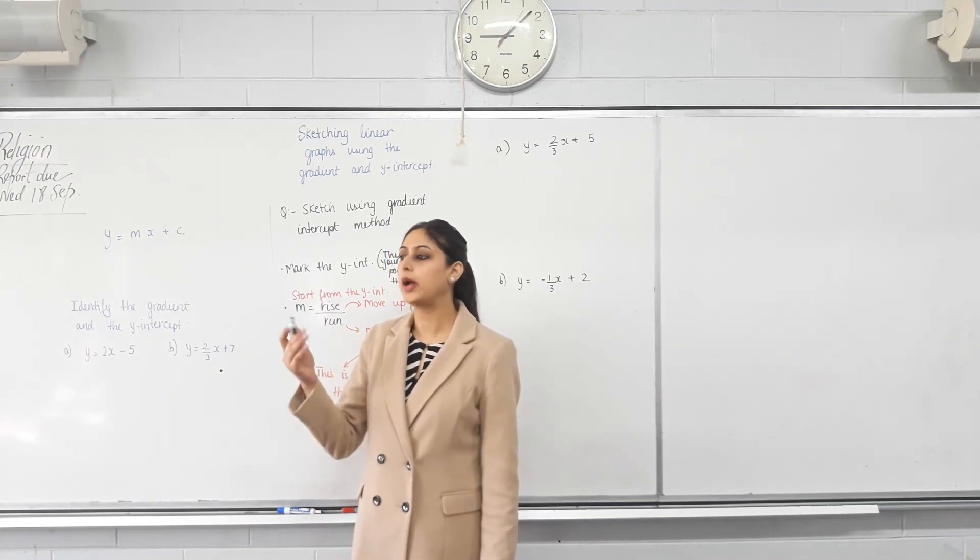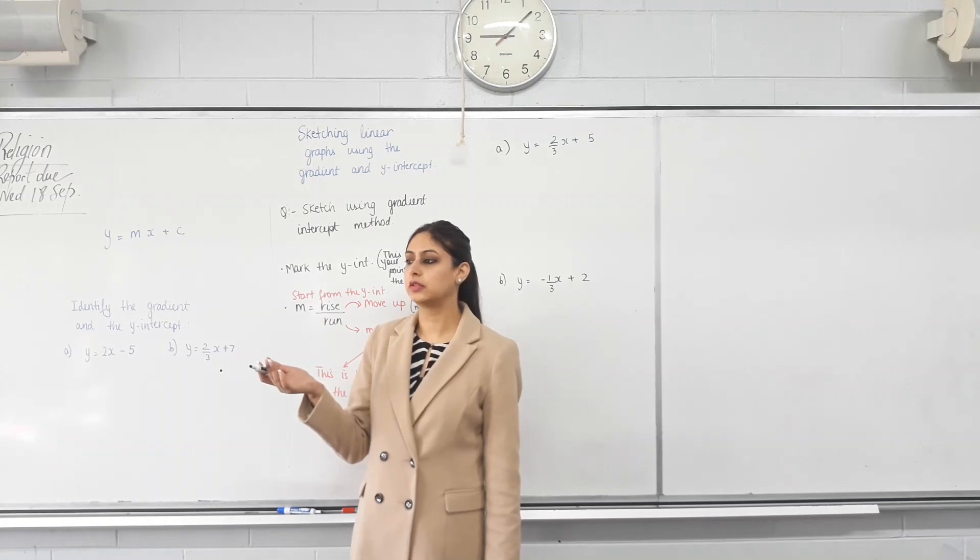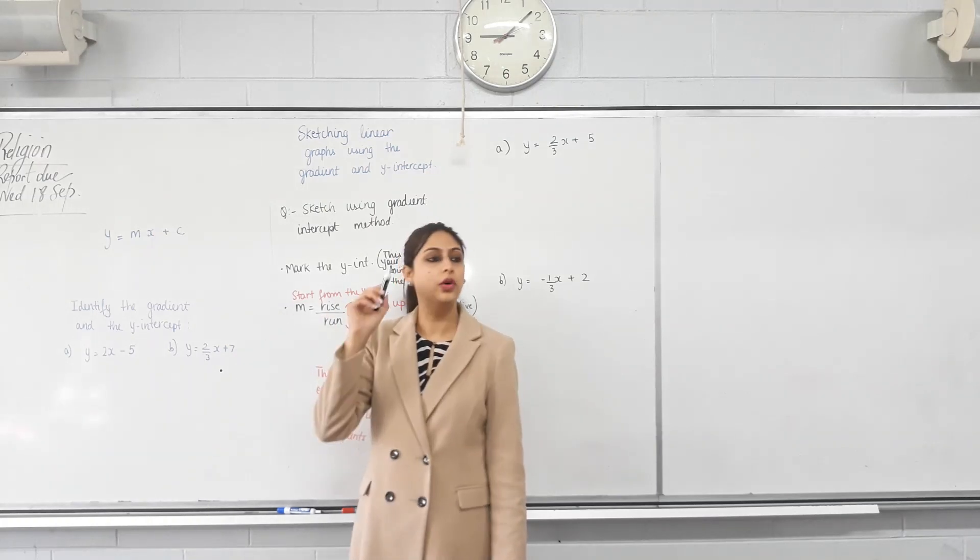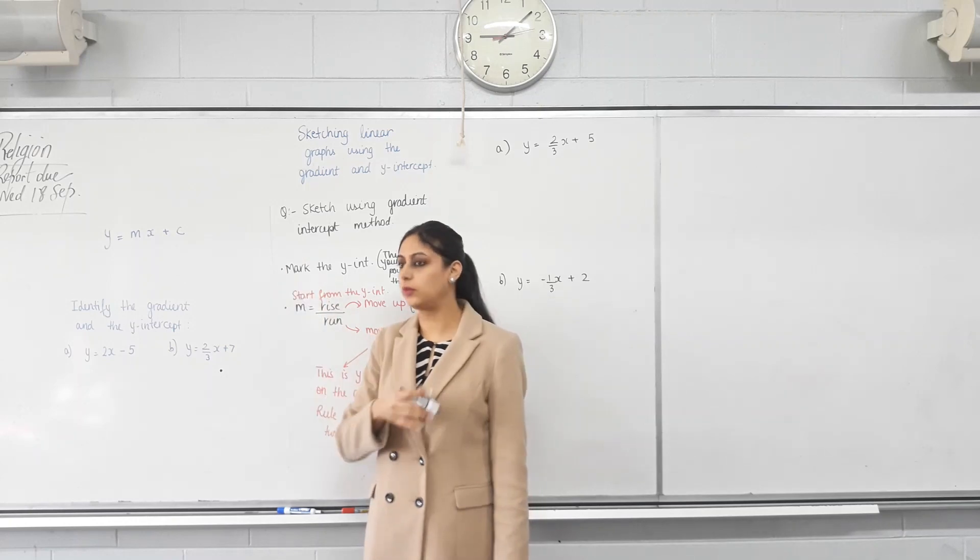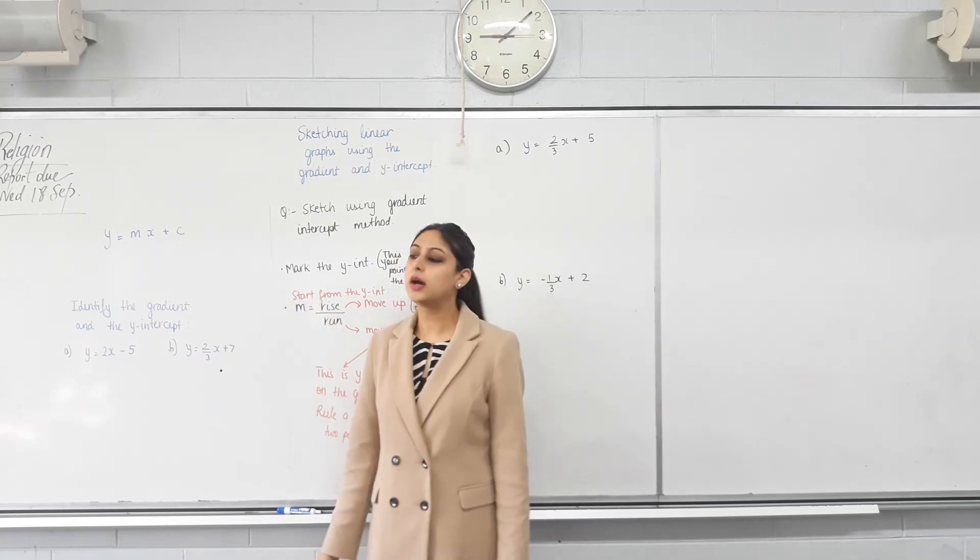Plotted dot. Yeah, how many points did we find? Two. More than two. We found three or four and we plotted different values and then we ruled a line through it, right? Now we're doing sketching.